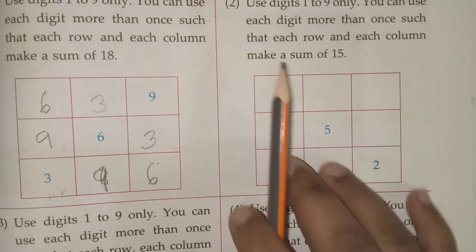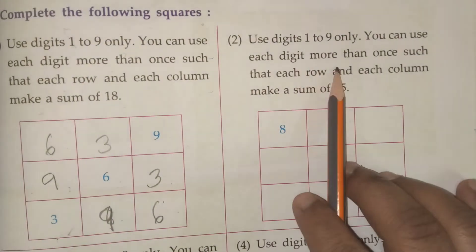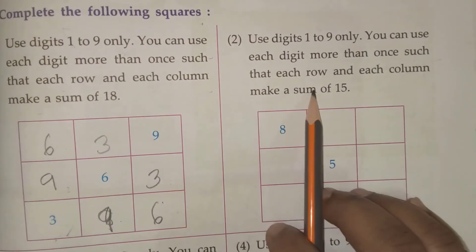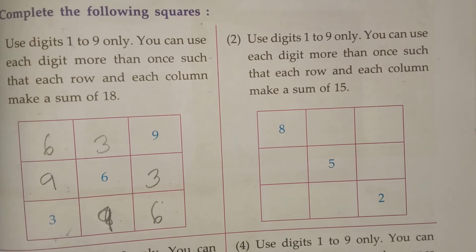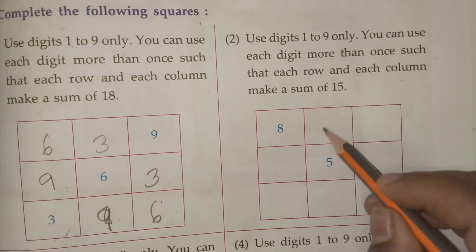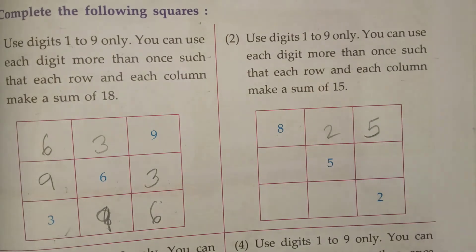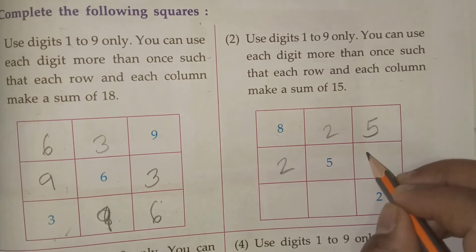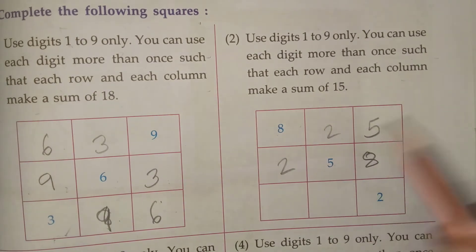Next you see. Use digit 1 to 9 only. You can use each digit more than once such that each row and column should make a sum of 15. Again here we should do the sum of 15. Here 8, 5, 2. So I am going to use here 2 and here 5. See 5, 7, 7 plus 8, 15. So 5 here it is there. So 2, here 8. So it is 15.